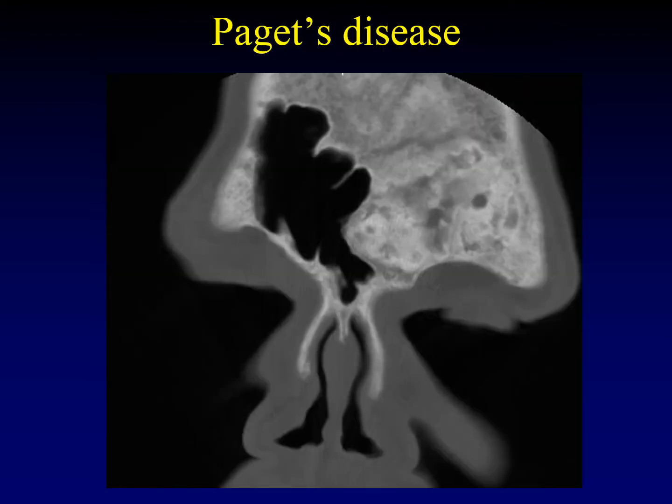Paget's disease, although it is renowned for affecting the calvarium, can also extend into or primarily affect the sinonasal region. Paget's disease is characterized by a thickening cortex and an enlarged abnormal medullary cavity; there are often cystic areas as well. Don't forget that fibrous dysplasia can mimic Paget's disease — usually the age of the patient is a good clue.